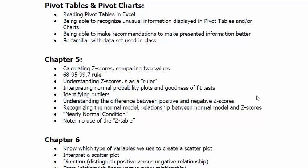For chapter 5, we're calculating z-scores and comparing two values. To calculate a z-score, we do observation minus mean over standard deviation. The top part — observation minus mean — is just how far an observation is from the mean. We divide by the standard deviation to express that distance in standard deviations. A z-score is simply how many standard deviations the observation is above or below the mean.